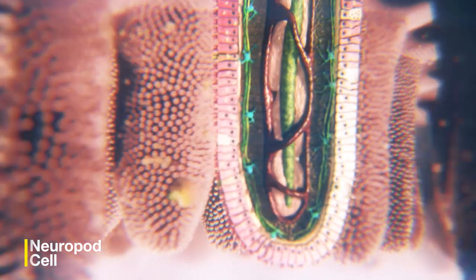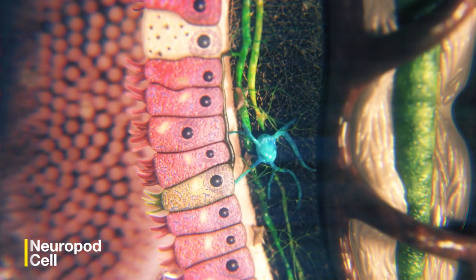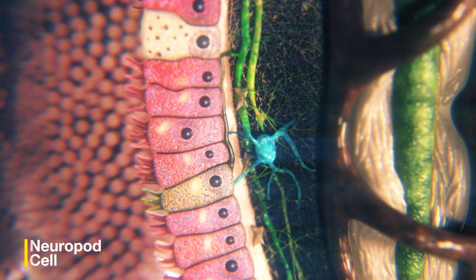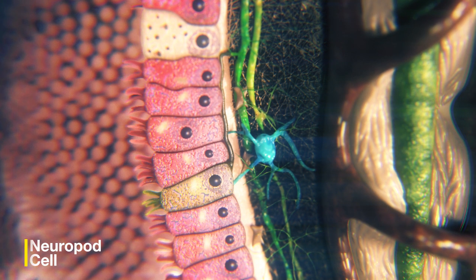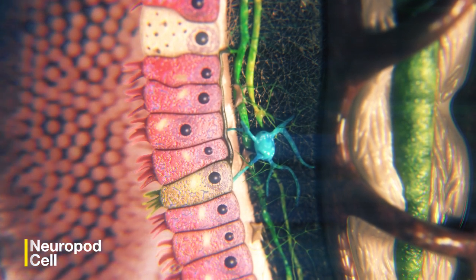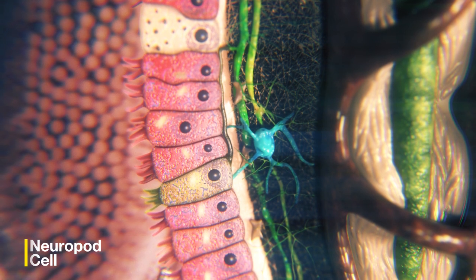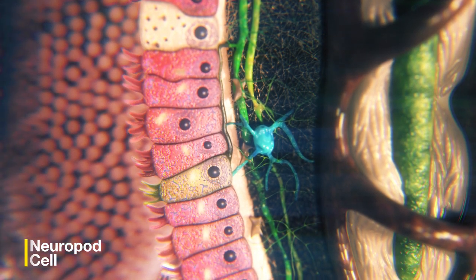In addition to communicating through hormones, we discovered that enteroendocrine cells also synapse with nerves, including the vagus nerve. We call those enteroendocrine cells synapsing with nerves neuropod cells.